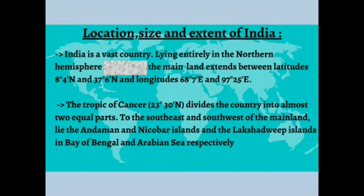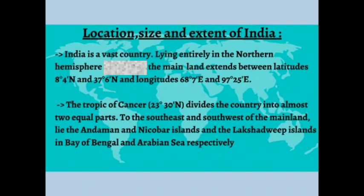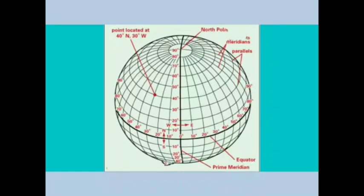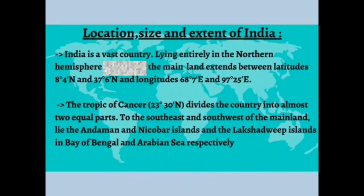India lies in the northern hemisphere and extends between latitudes 8 degrees 4 minutes North and 37 degrees 6 minutes North, and longitudes 68 degrees 7 minutes East and 97 degrees 25 minutes East. Using the prime meridian (0 degrees) as reference — with north upward, south downward, west left, and east right — we can locate India towards the north and east. By knowing the latitude and longitude values, we can locate any place on earth.